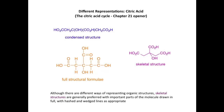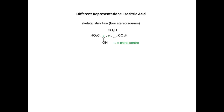We're now going to look at the use of hashed and wedge lines, looking at a slightly different molecule called isocitric acid, which, as you might expect, is an isomer of citric acid. Here is the skeletal structure of isocitric acid. If we look at this carbon atom here and this one here, we'll see that each of those carbon atoms are bonded to four different substituents — so they are chiral carbon atoms, or chiral centers. As we have two chiral centers in the molecule, we can draw four different stereoisomers for isocitric acid.